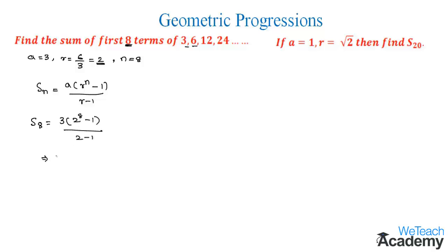This we can write as 3 times 2 power 8. Its value is 256 minus 1 divided by 2 minus 1, which would be 1, so it can be ignored. This would come as 3 times 255, which implies we get the value as 765.